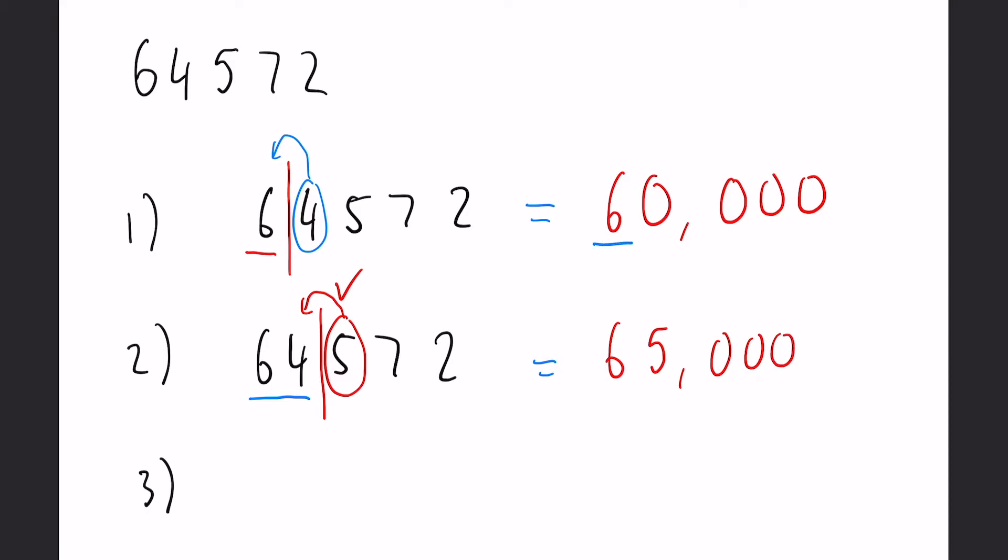Notice how before we have that one significant figure that's six, this time we have the two because we have six and five. Okay, for our last one we should end up with three significant figures. So if we write that down again, identify the first three and draw that line in after.